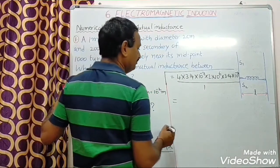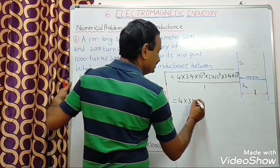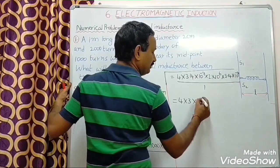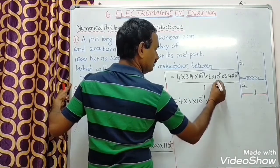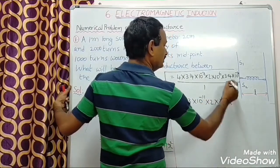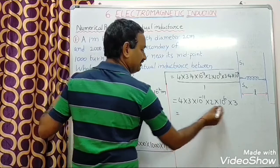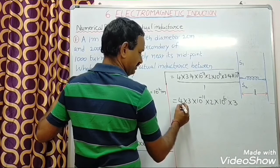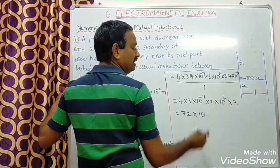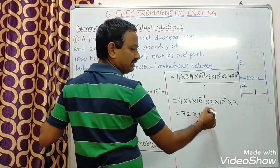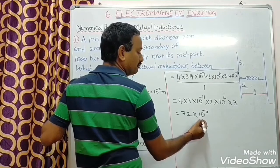So, 4 into 3 approximately equals 12, and 12 into 3 is 36, and 2 into 36 is 72. Then, 10 power minus 7 into 10 power minus 4 gives 10 power minus 11, and 10 power minus 11 into 10 power 6 gives 10 power minus 5. So, I got 72 into 10 power minus 5 Henry.